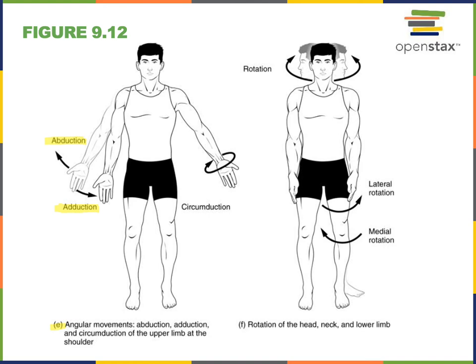Next we'll look at rotation. In figure F, you can see rotation of the head. Moving the head to the right or to the left rotates the articulation between the atlas and axis. The atlantoaxial joint is a pivot joint that enables rotation, allowing you to pivot your head to the right or to the left.